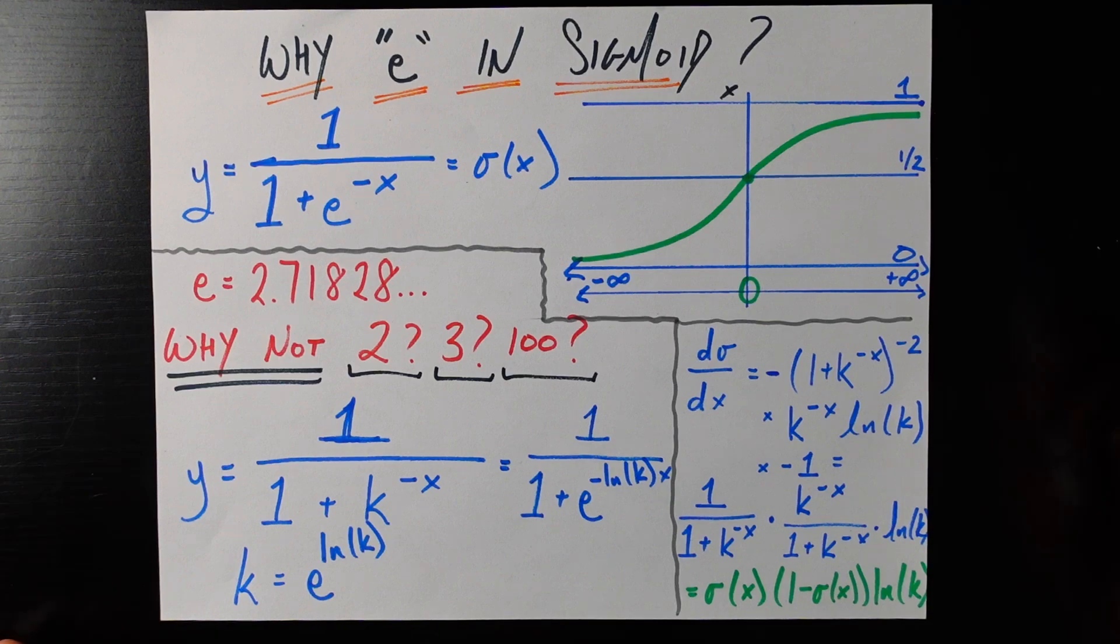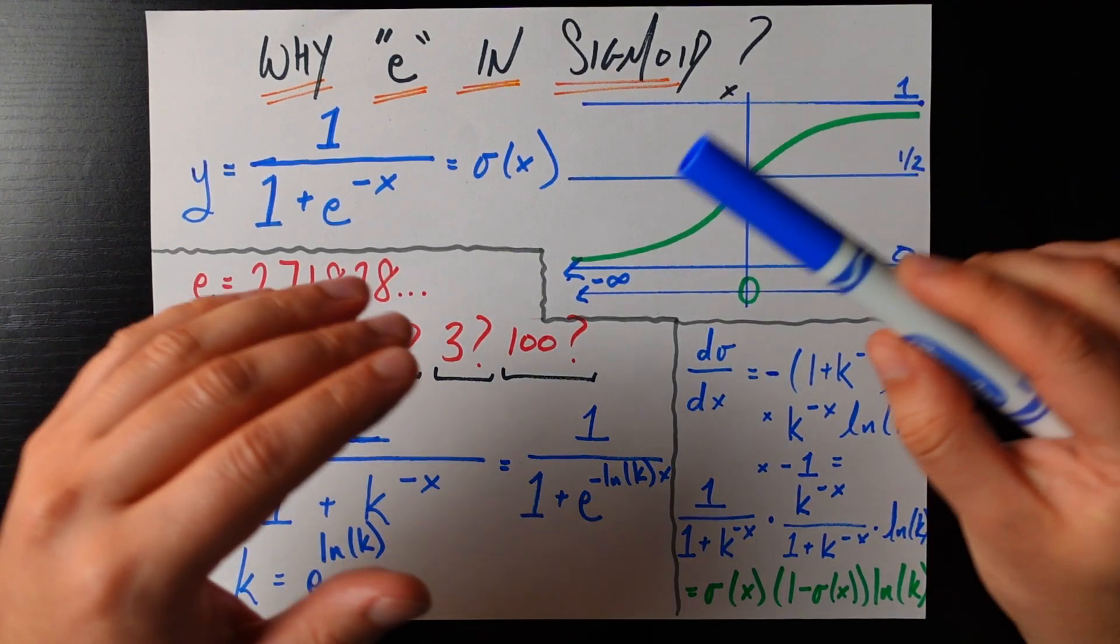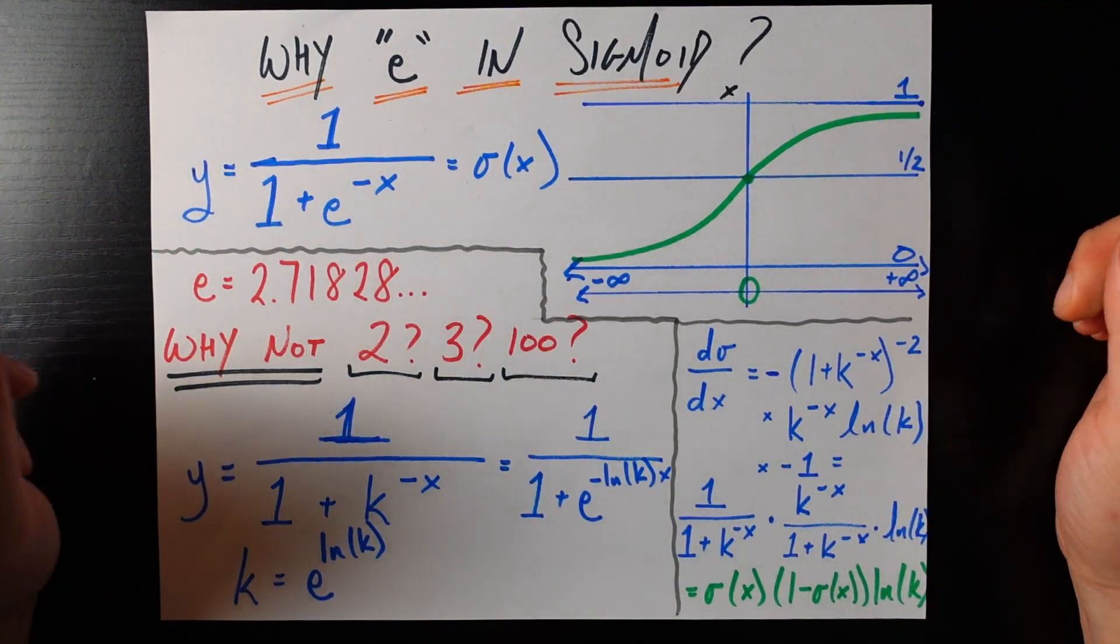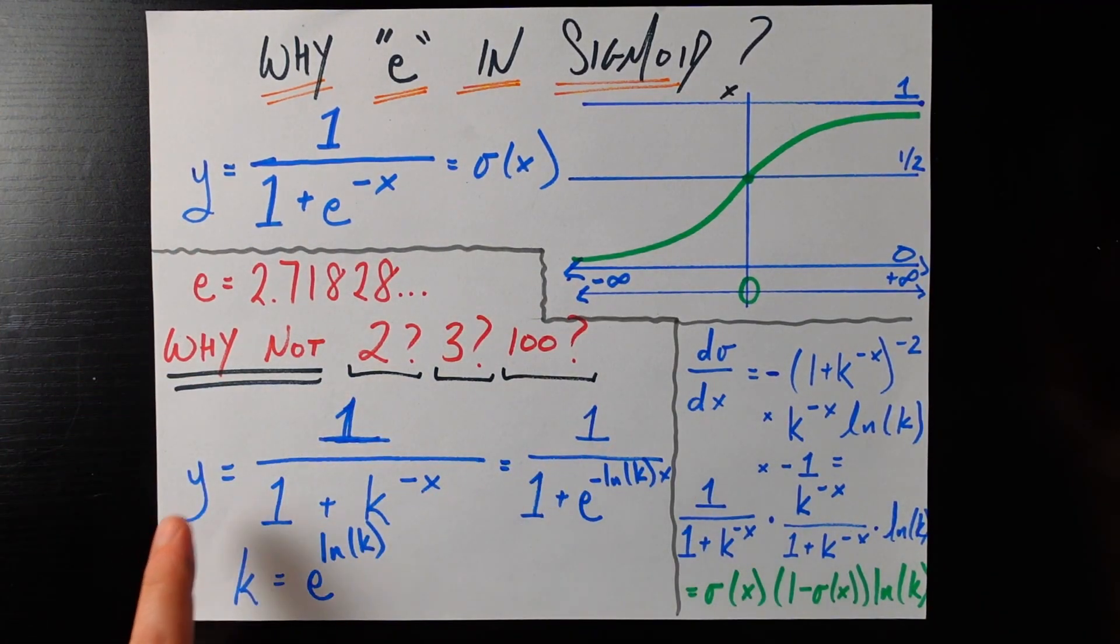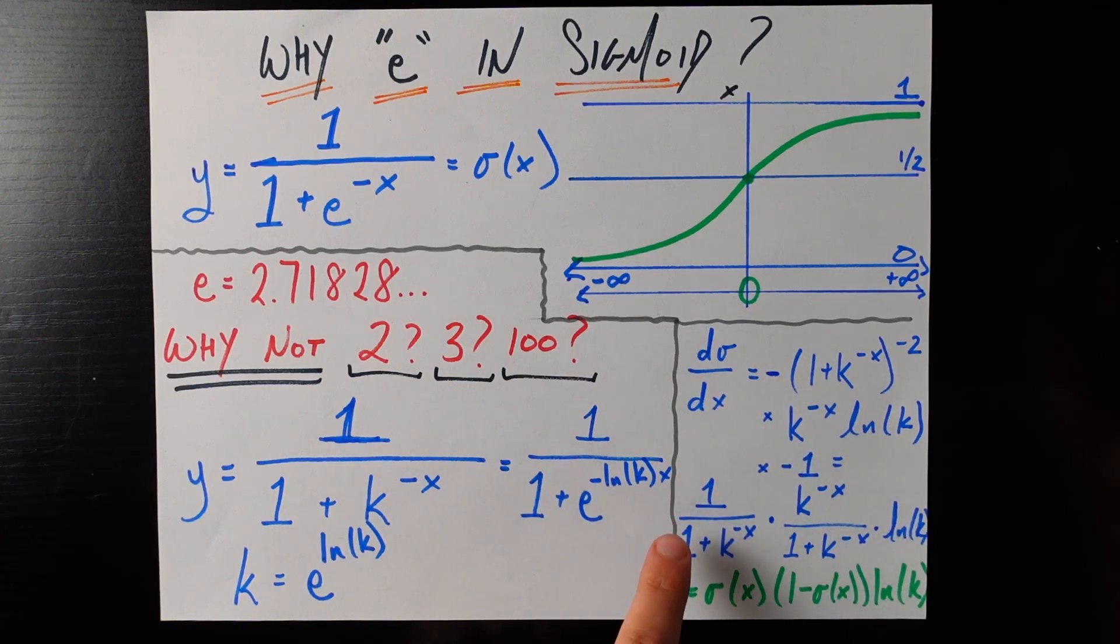Another good reason, probably a better reason why we use the number e here is when we take the derivative of the sigmoid function which is a very very common thing we do especially when we're dealing with neural networks and back propagation. If we take the derivative of this new sigmoid function then we work out some math and we get that's equal to 1 over 1 plus k to the negative x times k to the negative x over 1 plus k to the negative x times natural log of k.